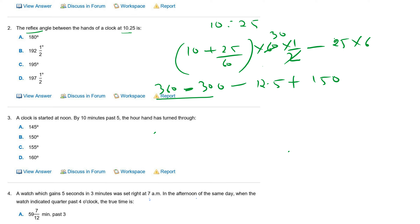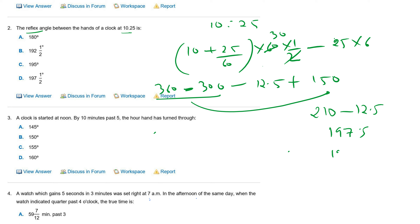So, we take 60 here — plus 152.10 minus 12.5 gives 197.5 — one ninety seven and a half degrees. D is the answer.